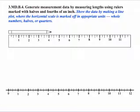Now let's look at the second part of the standard that deals with showing the data by making a line plot where the horizontal scale is marked off in appropriate units - whole numbers, halves, or quarters. So we make our line plot. In this case, the pencil was four and a quarter inches long, so we mark off at that position four and a quarter. Note the different use of the terms here in the standard. They talk about fourths of an inch, but they also talk about quarters. So it's important that students realize the meanings are synonymous. We can refer to a fourth of an inch or a quarter of an inch.